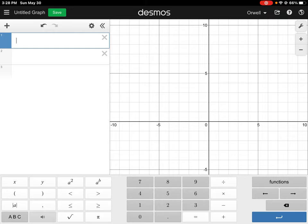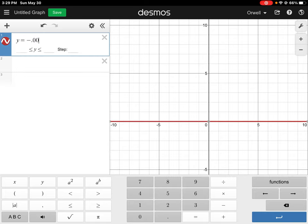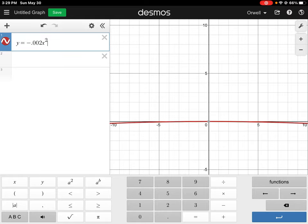So our first equation is h equals negative 0.002 d squared plus 0.3d. So we can say that as the same as y equals negative 0.002 and then the d is the same as the x. And then we can square it and then we can go plus 0.3x. Okay, so that's going to be one of our equations that we plot.